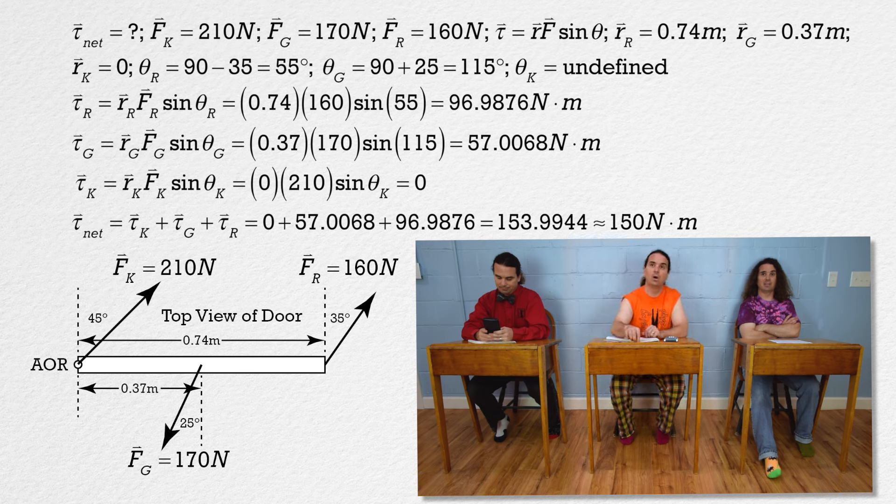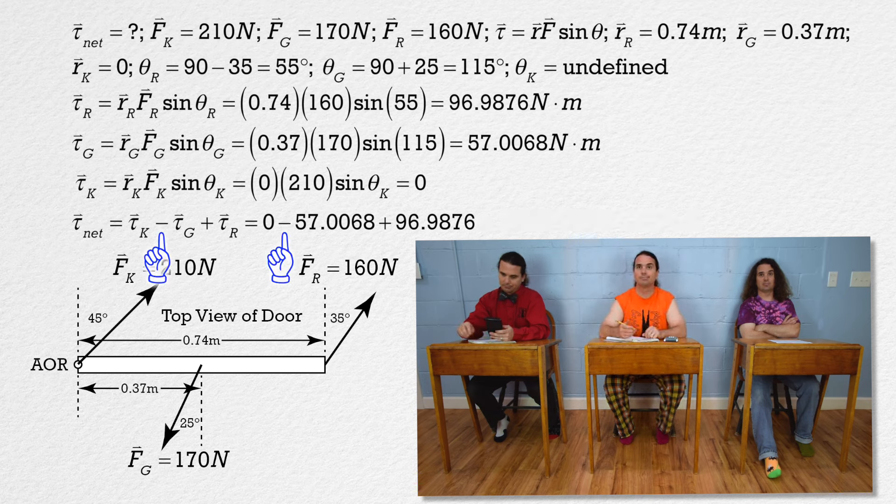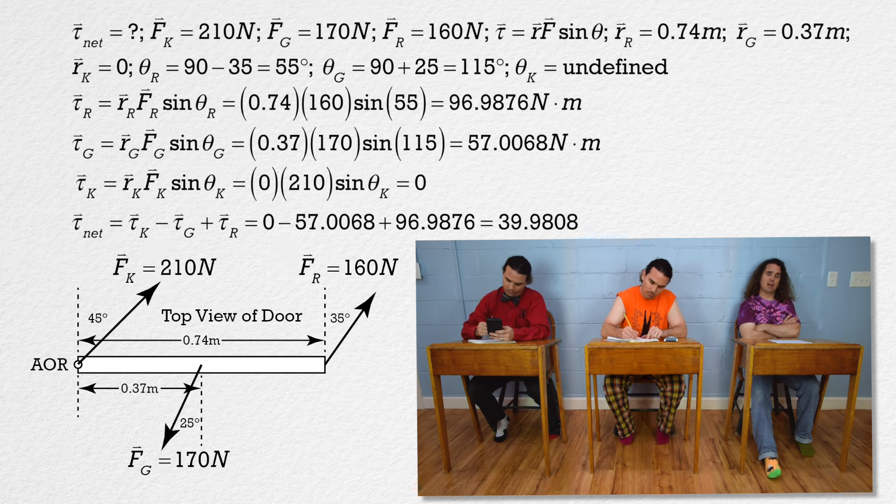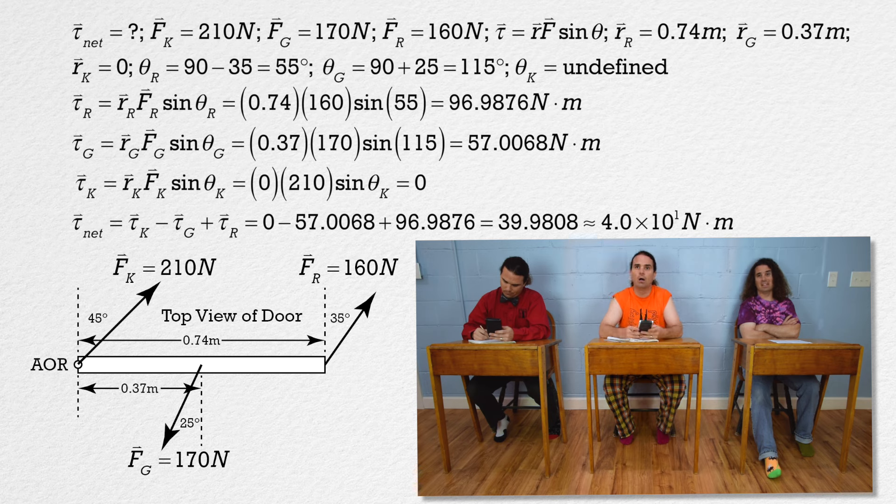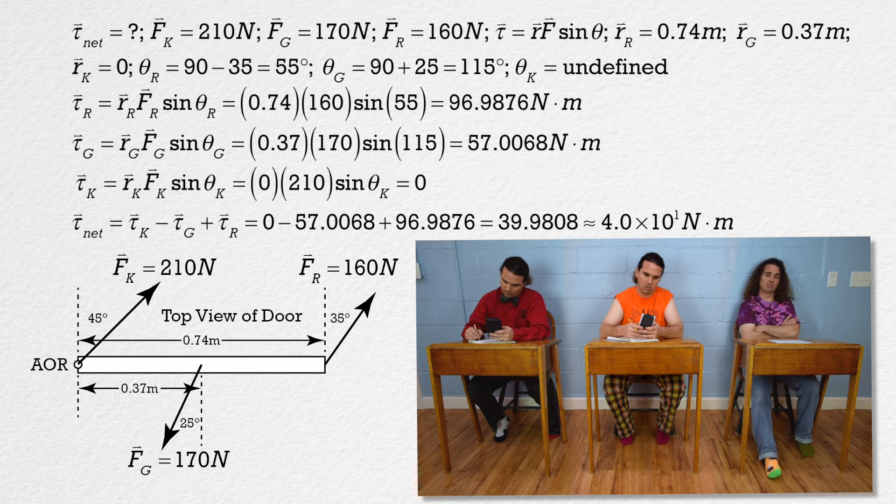The net torque is then Kate's torque minus Geneve's torque plus Ryan's torque. That equals 39.9808, or 40 newton meters, but we need that with two significant figures, so 4.0 times 10 to the first newton meters with two significant figures.